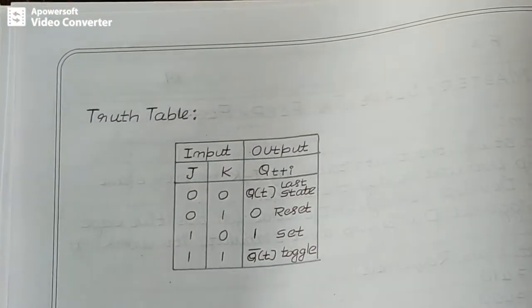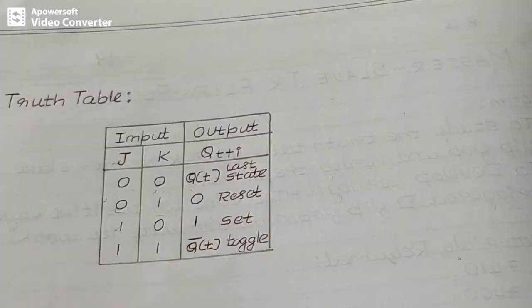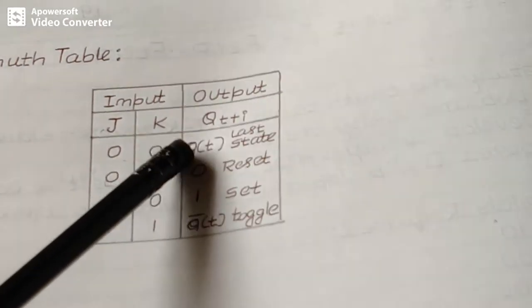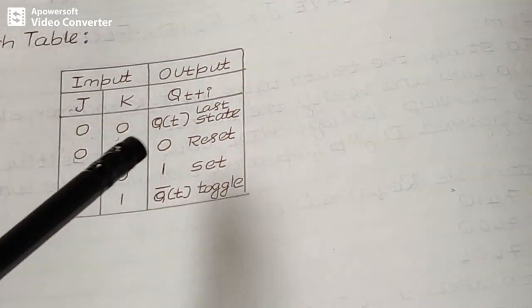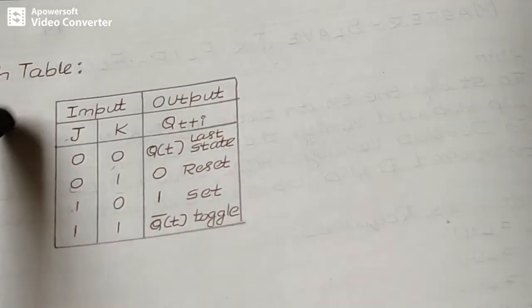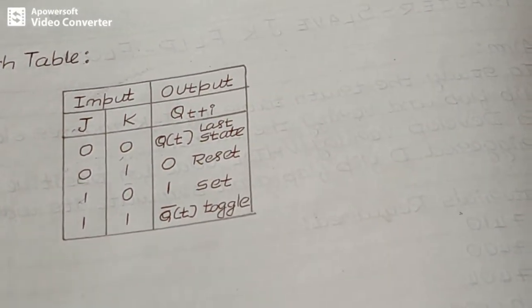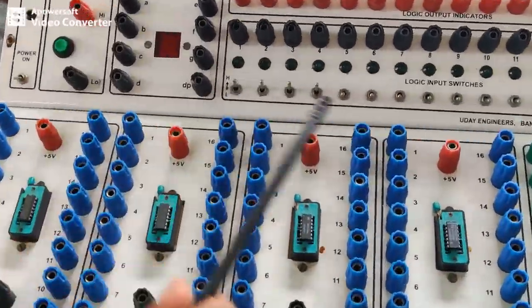Now we will see the implementation part. The truth table of JK master-slave is: J=0, K=0 gives the last state; J=0, K=1 resets; J=1, K=0 sets; and J=1, K=1 toggles. We will now implement the JK master-slave using NAND gates.